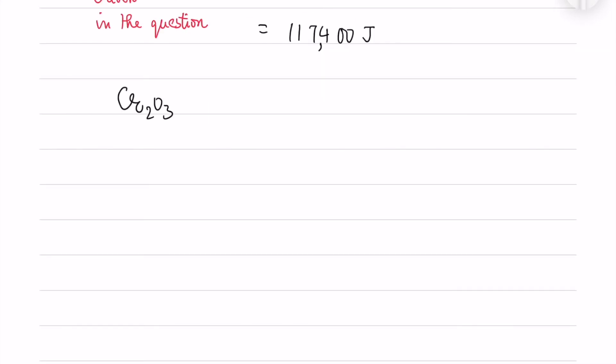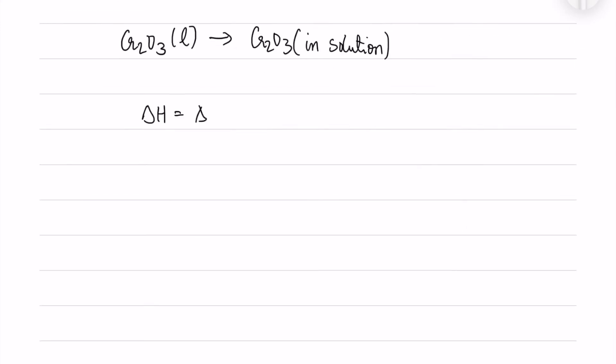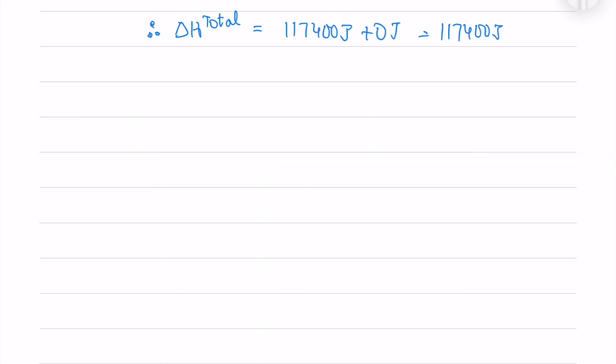Now first, we take the chromium oxide solid which dissolves in as liquid. The ΔH of melting is what we calculated previously. From liquid to solution, the mixing enthalpy of an ideal solution is zero. So we take these two and add them up. The total ΔH equals 117,400 Joules.